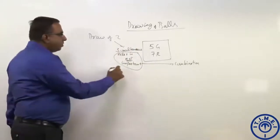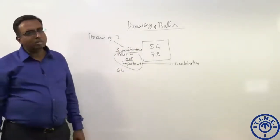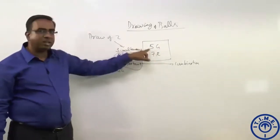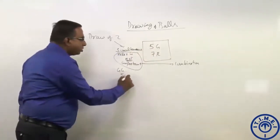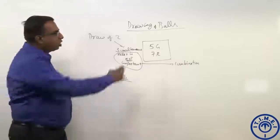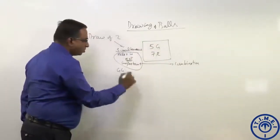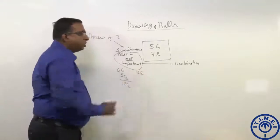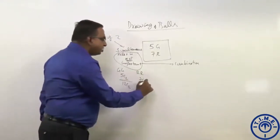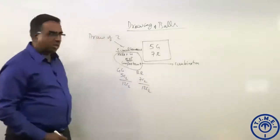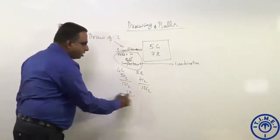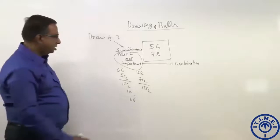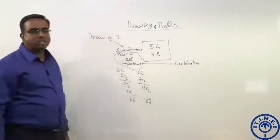What is the probability of drawing two green balls? If two balls are drawn simultaneously, there are 5 greens, so we can select 2 out of 5 in 5C2 ways. Totally there are 12, so 12C2. That is the probability of drawing both green, which is 10 by 66. What is the probability of drawing both red? Both red means 7C2 by 12C2, which is 21 by 66.